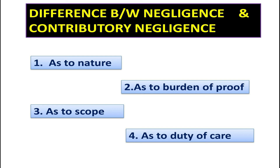Difference between Negligence and Contributory Negligence. Number one, as to nature: Negligence is a tort in its nature, while contributory negligence is not a tort but a defense. Number two, as to burden of proof: In negligence the burden of proof is always on the injured person, while in contributory negligence the burden of proof is always on the defendant. Number three, as to scope: Negligence has wider scope while contributory negligence has a lesser scope because it is derived from negligence. Number four, as to duty of care: In negligence the duty of care is imposed on the wrongdoer, while in contributory negligence the duty of care is imposed on both parties.